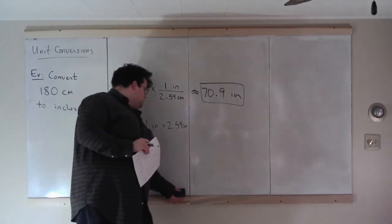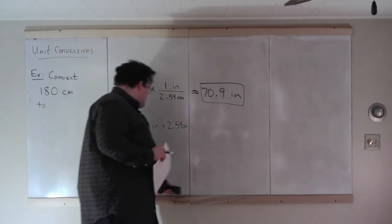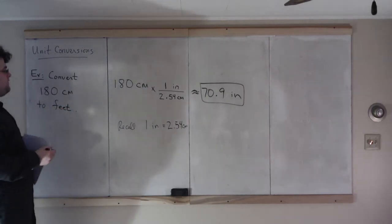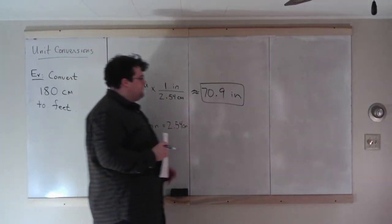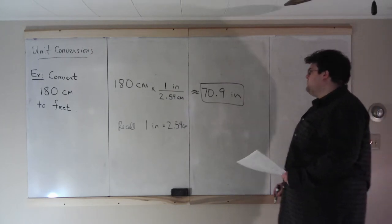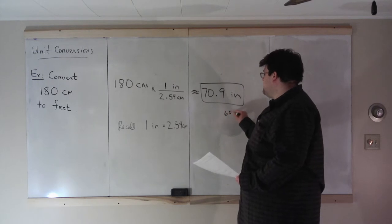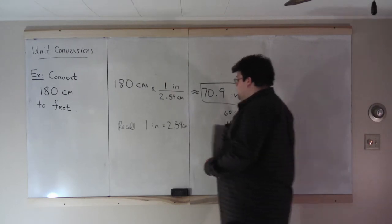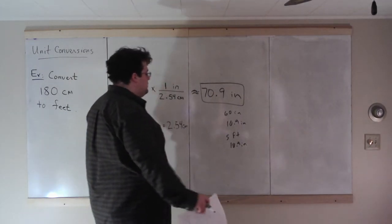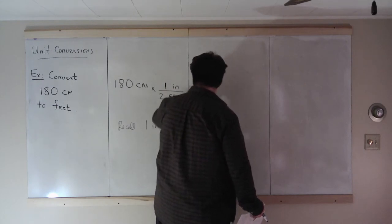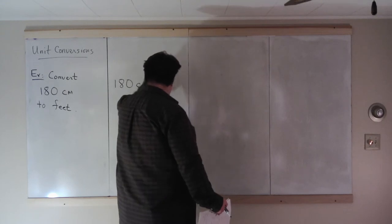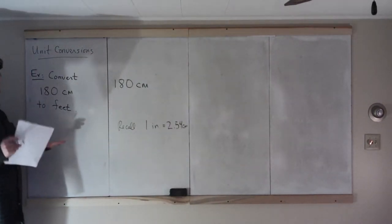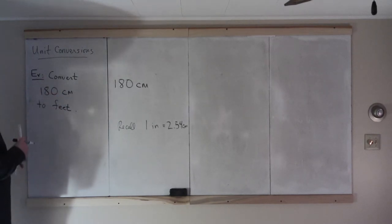Let's do the next example: convert 180 centimeters to feet. Before doing that, note that 70.9 inches is 60 inches and 10.9 inches, so it's 5 feet 10.9 inches if you want a more understandable measurement. But instead, I'm going to show how to convert 180 centimeters to feet directly, demonstrating two unit conversions at once.